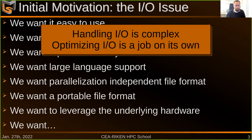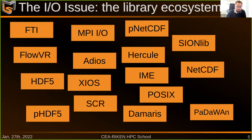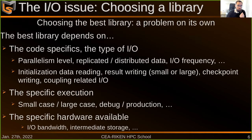Luckily, when we have a complex problem like that with experts, there's usually a solution in the form of libraries. For IO, there are libraries that encode best practices. In fact, there are many libraries that support IO and data handling in simulation codes. And because of that, choosing the best library becomes a problem on its own, because there is no library that is always the best.